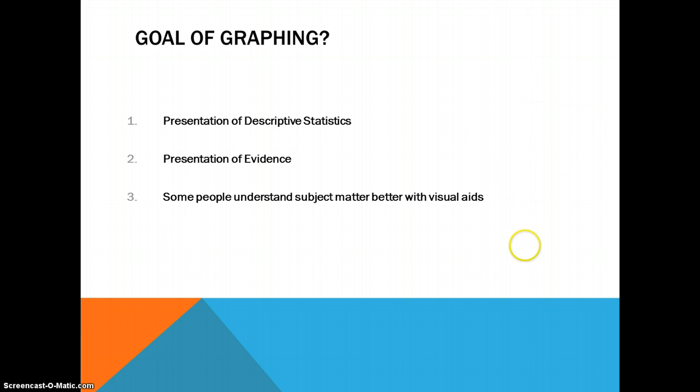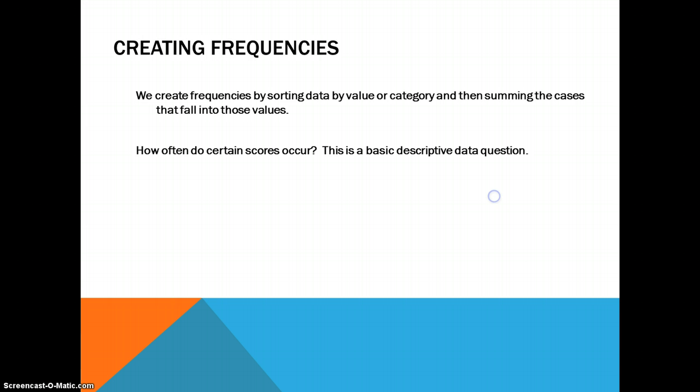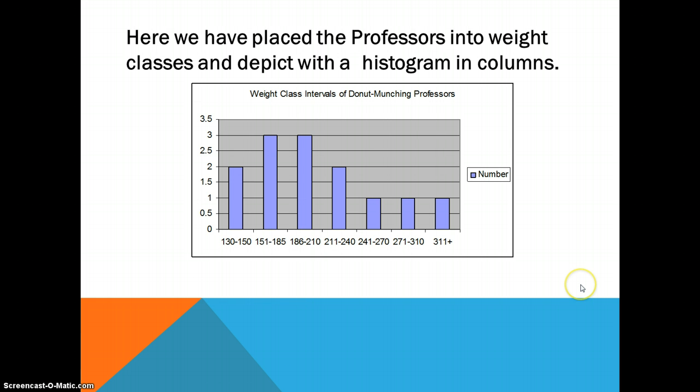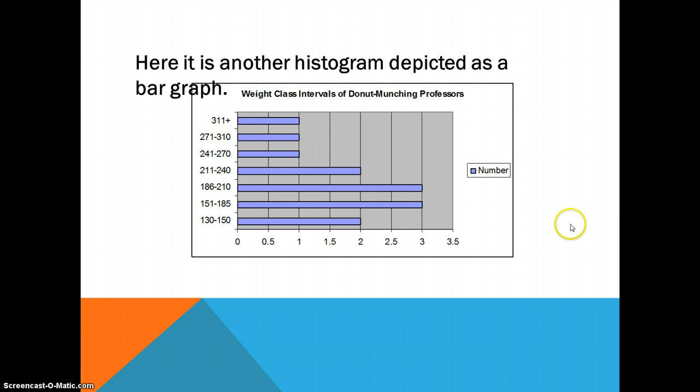Graphing is very useful in that regard as well. We can graph and display frequencies either by value or by category. We can show how often scores occur. For example, let's take a look at these donut eating professors again. And we can rank these people from most to least. Or we can put it into a histogram. Here is an example of a histogram of the donut eating professors. Or we can do it in terms of a bar graph. Right here. Here is a bar graph.